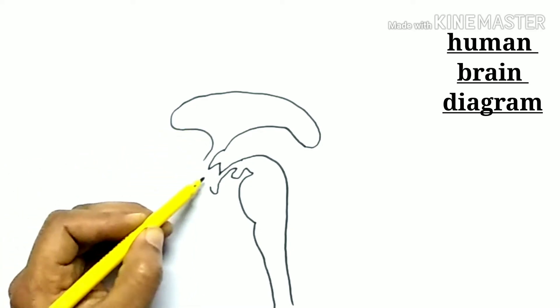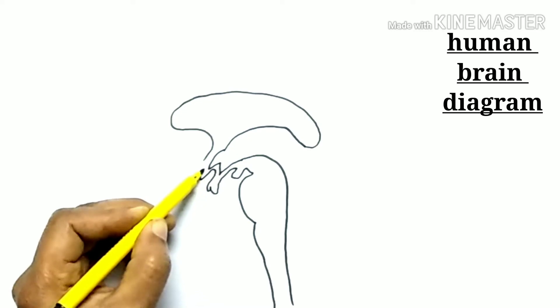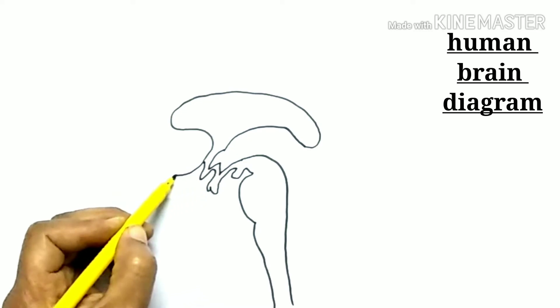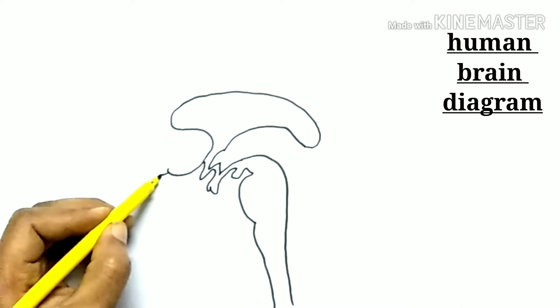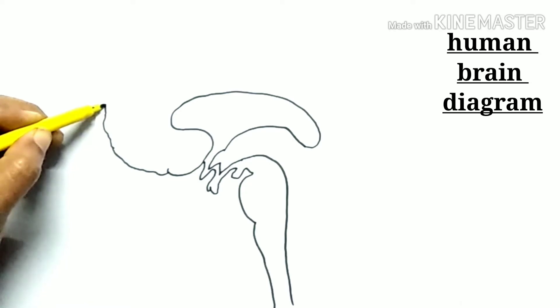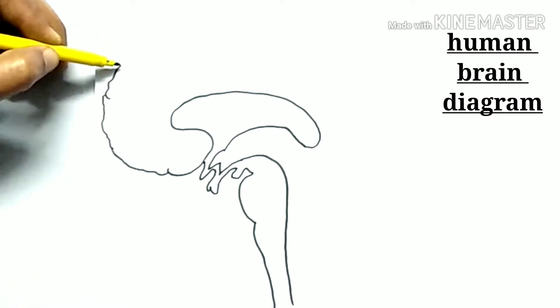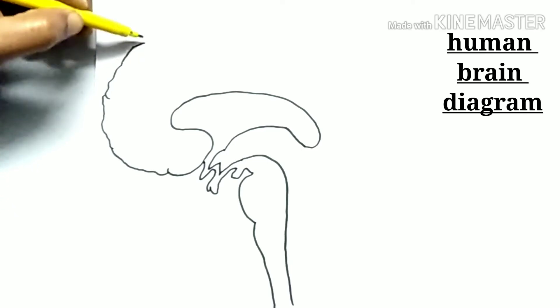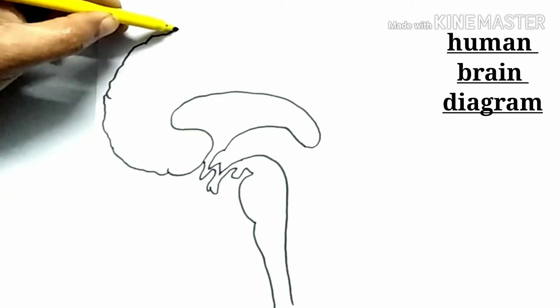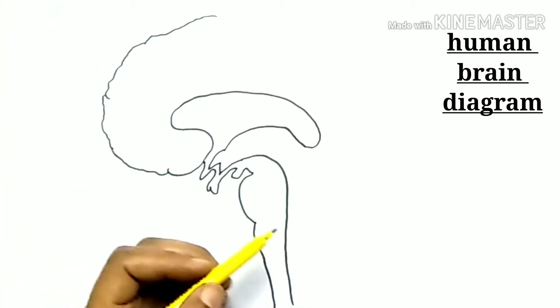It has several layers called meninges. The human brain has three major parts: first, forebrain; second, midbrain; and third, hindbrain.